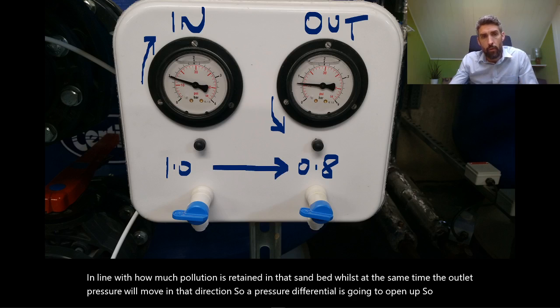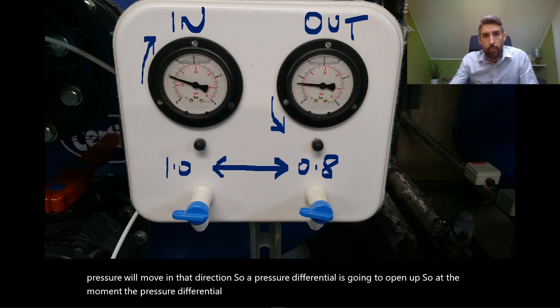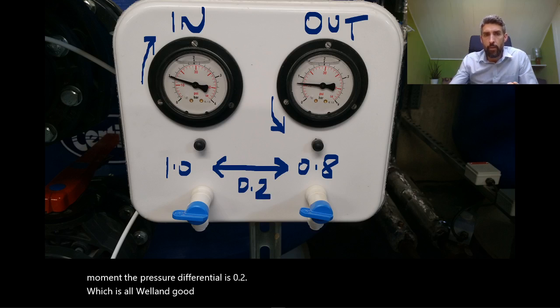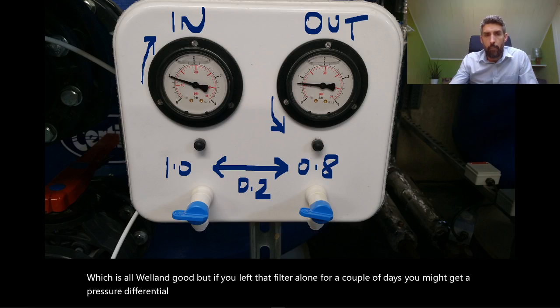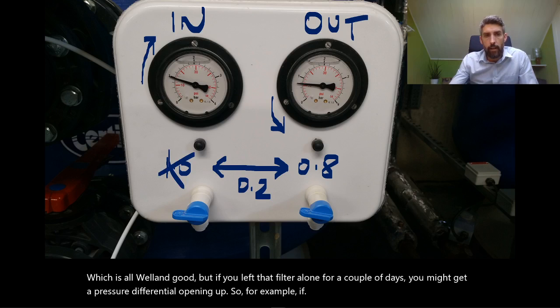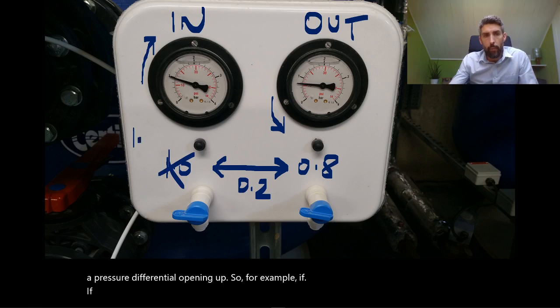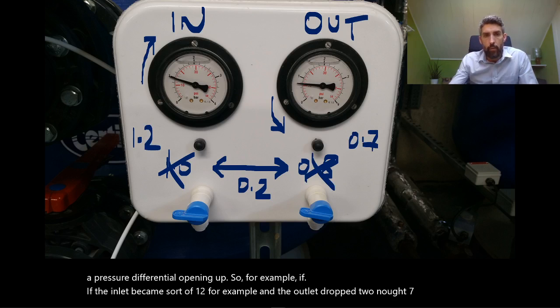At the moment the pressure differential is 0.2, which is all well and good. But if you left that filter alone for a couple of days, you might get a pressure differential opening up. For example, if the inlet became 1.2 and the outlet dropped to 0.7, then we're dealing with a pressure differential of 0.5.